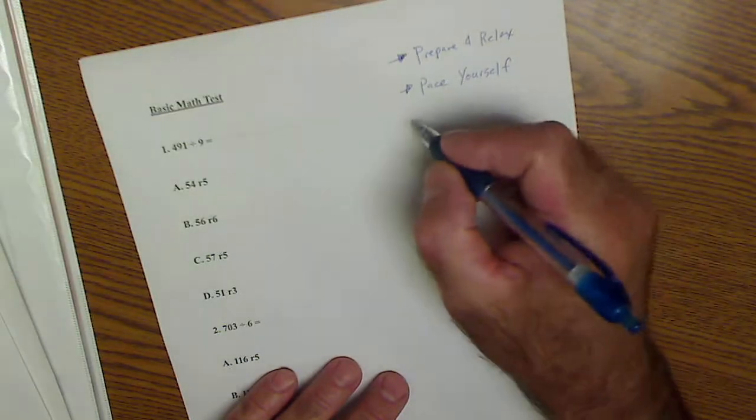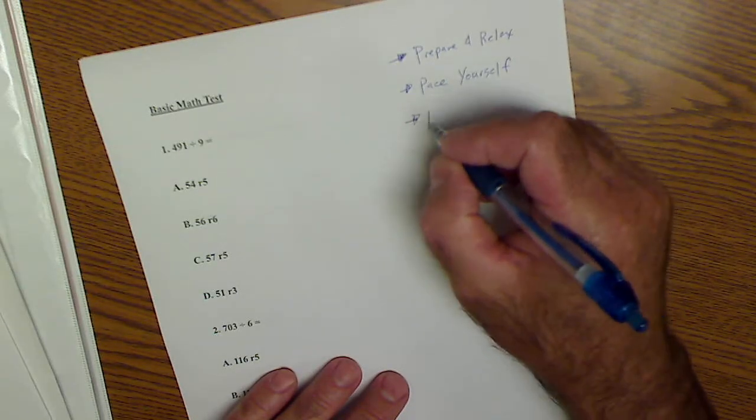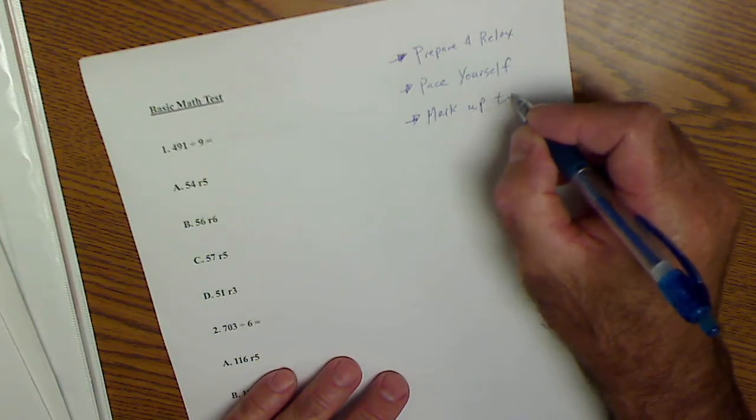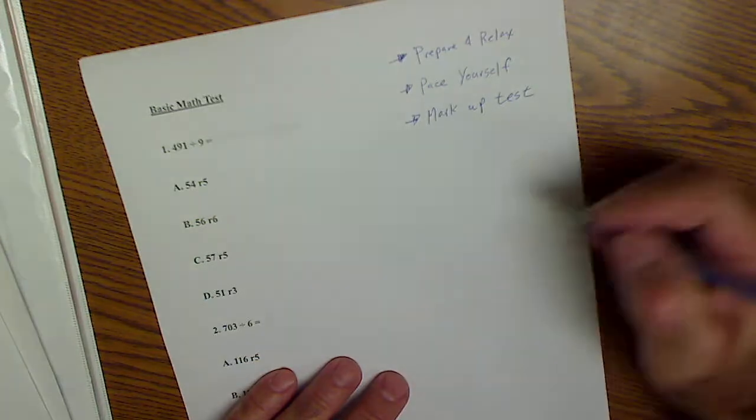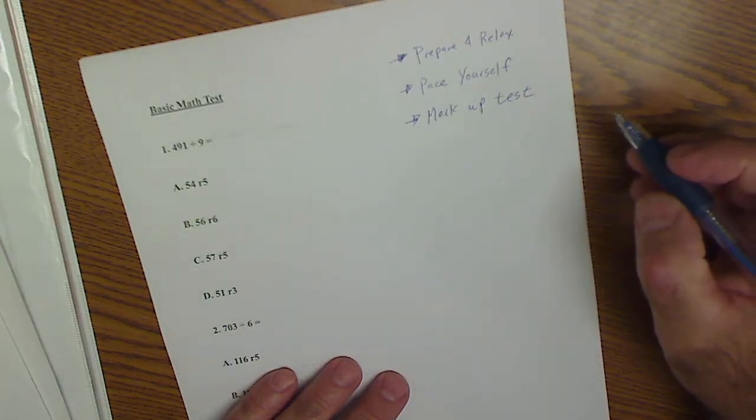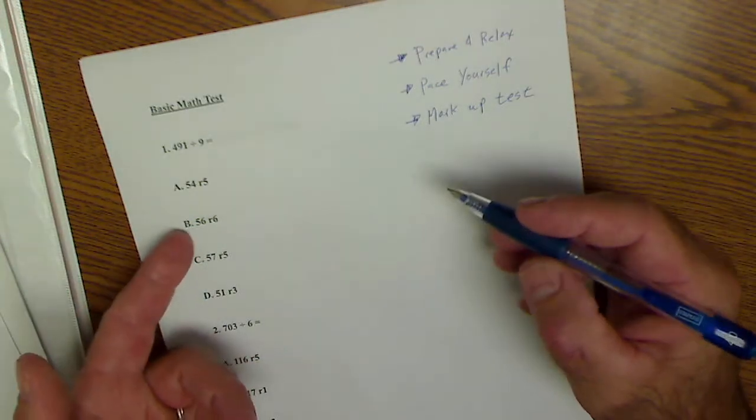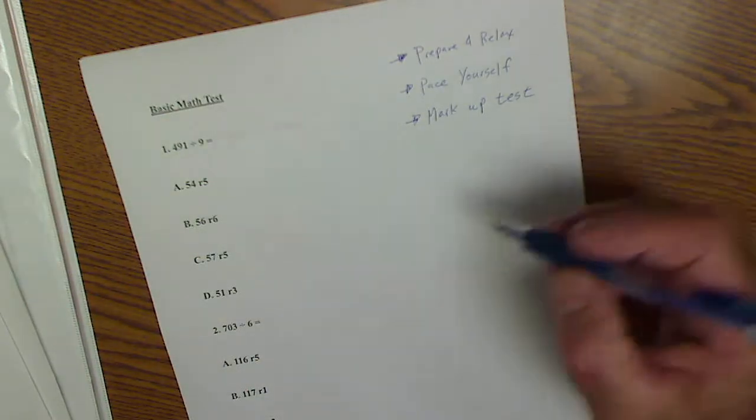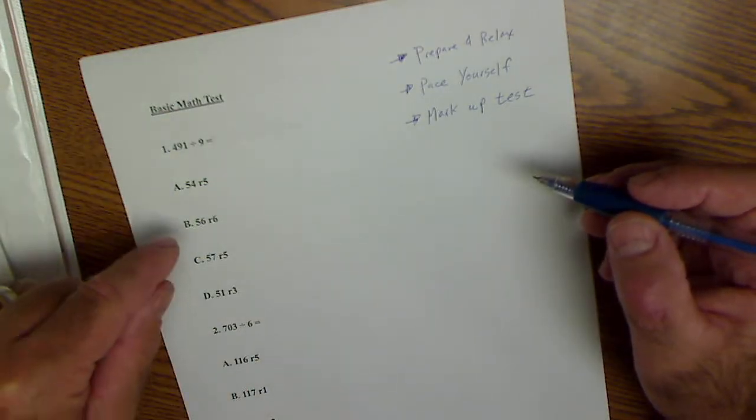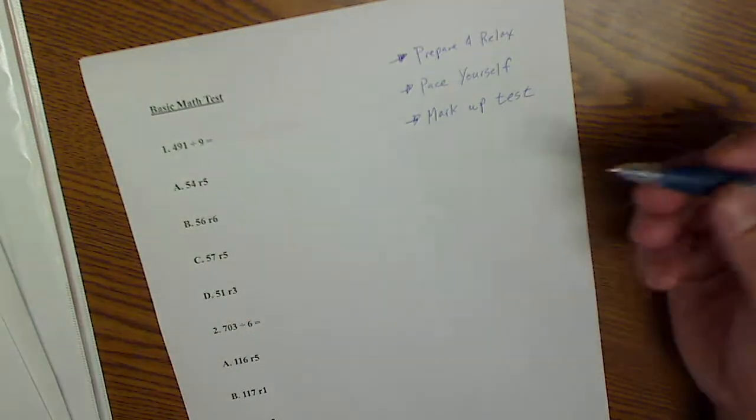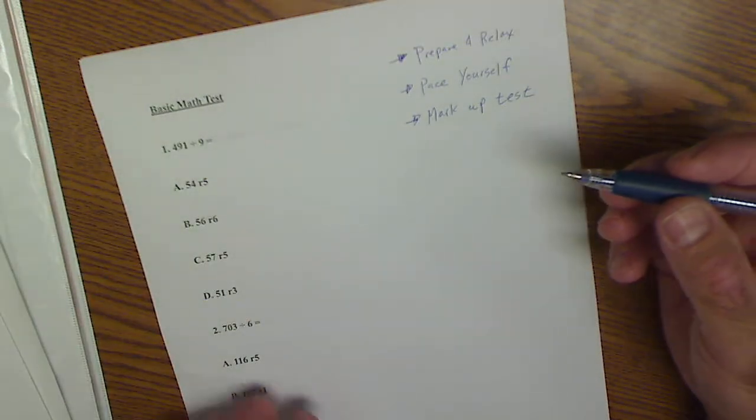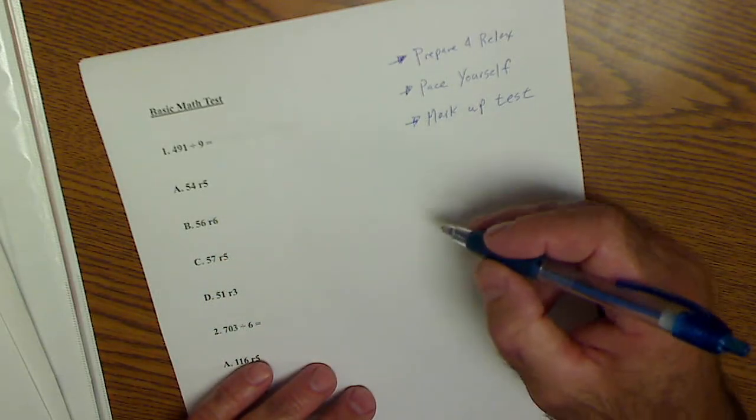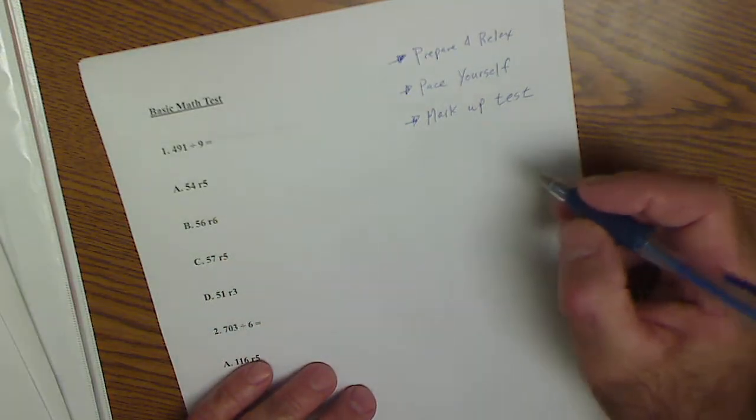Mark up your test. You do this for a couple reasons. One is so you don't make careless mistakes - you kind of highlight key points. The second is if you can't figure out the problem, you end up going back to it and you need to check your work. You don't have to start all over again. All your work's right there. If it's a computer test, mark up your scratch paper. Make sure you label everything.